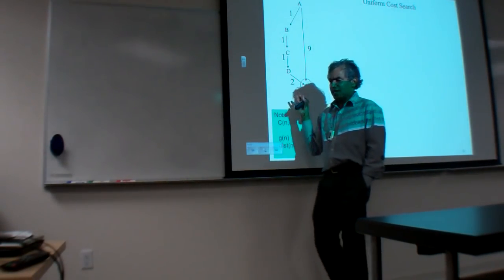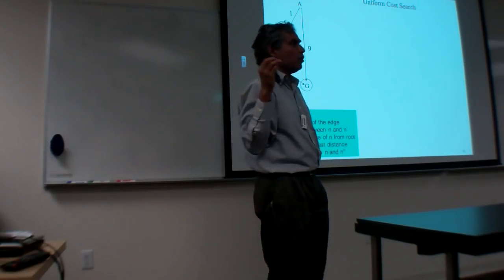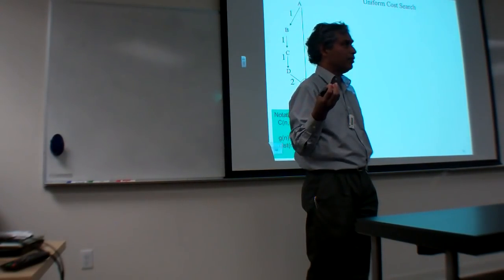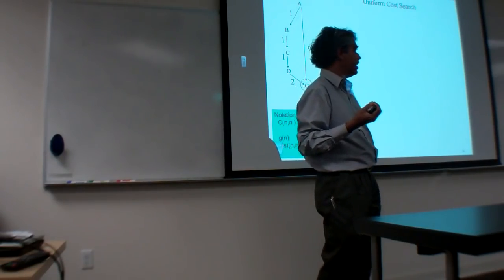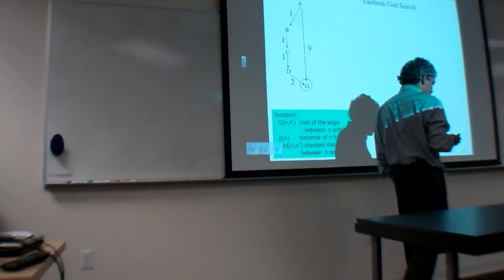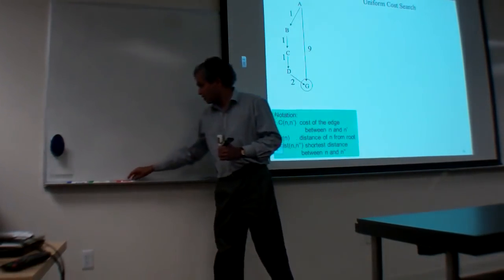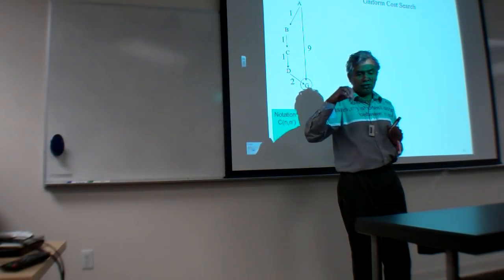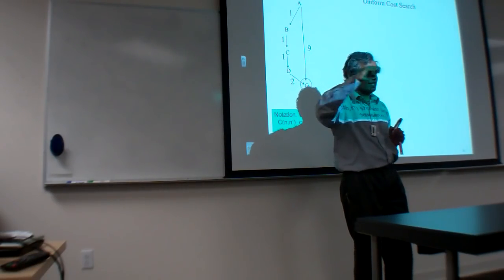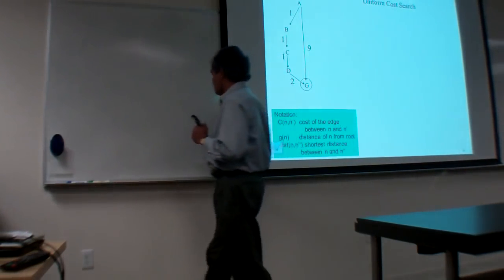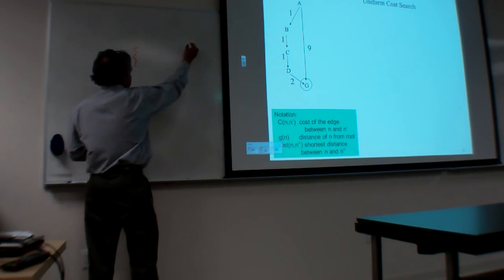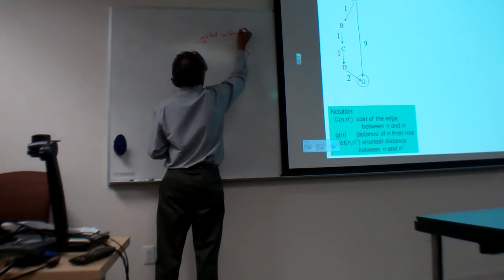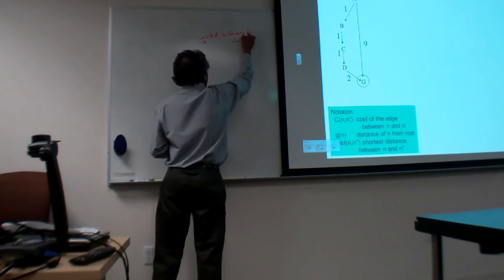The question is, can we deal with generalizations of the breadth-first strategy, which was already optimal before? Can you make it optimal here? The idea is that instead of putting — think of the breadth-first strategy previously where we were essentially using a FIFO queue, first in first out — you can also think of it as a queue sorted in terms of depth of the node.